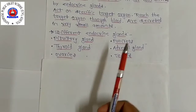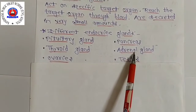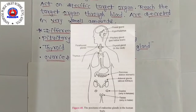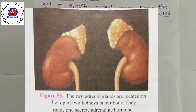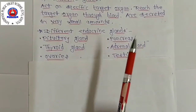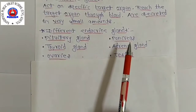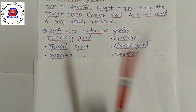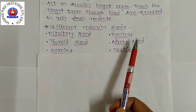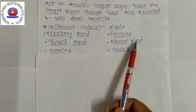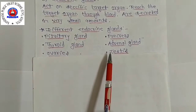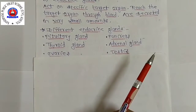The adrenal glands are located on top of the two kidneys — there are two adrenal glands. The adrenal gland secretes the hormone adrenalin. The function of adrenalin is to regulate the heart rate, breathing rate, blood pressure, and carbohydrate metabolism. Actions which are not performed according to our desire are called involuntary actions, and these are related to the adrenalin hormone.